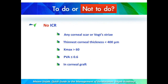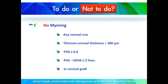We do not do intracorneal rings when there is any corneal scar or Vogt's striae, when thinnest corneal thickness is less than 400 microns, when Kmax is above 60 diopters, when potential visual acuity is less than 0.6, or in corneal grafts. We do not do myring when there is any corneal scar, when thinnest corneal thickness with epithelium is less than 380 microns, when potential visual acuity is 0.6 or less, when there is no reasonable difference between potential and uncorrected visual acuity, or in corneal grafts.